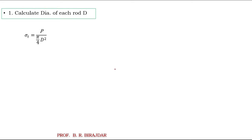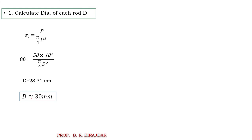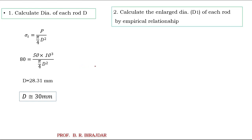Now we move to the actual design. First, we calculate the diameter of the rod. We know tensile stress σt = P / A, and since the rod is circular, A = π/4 × D². Putting in the values — permissible stress 80 N/mm² and load 50 × 10³ N — we get D = 28.31 mm. After rounding up, the diameter D ≈ 30 mm.